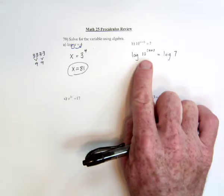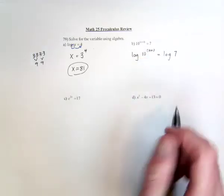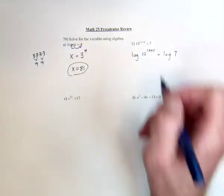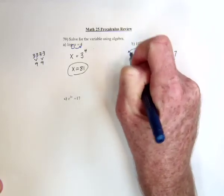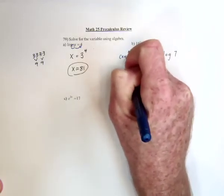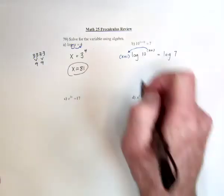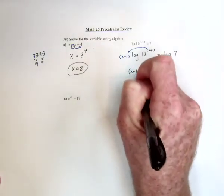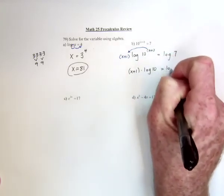If you didn't realize that, or if this number 10 was anything besides a 10, here's what you do: use the rule of logarithms that says once you have this logarithm, you can take this exponent, bring it down here in front and multiply. So we would have (x+1) in parentheses multiplied with log of 10 equals log of 7.